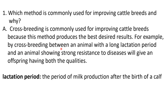For example, by cross breeding between an animal with a long lactation period. Lactation period means the period of milk production after the birth of a calf. After the birth of a calf, a buffalo or cow gives milk. To prolong that period of milk production is what is known as the lactation period. A longer lactation period means you are increasing the milk production.